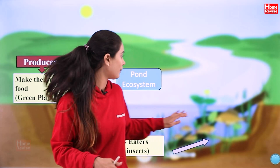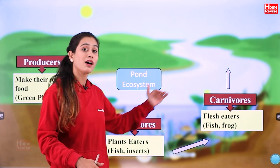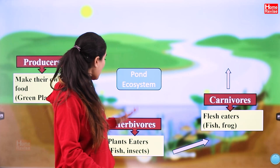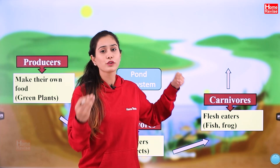Then we come to carnivores. Who will eat these? Carnivores will eat herbivores. For example, some kinds of fish and also frogs are carnivores.